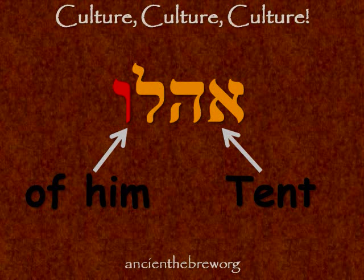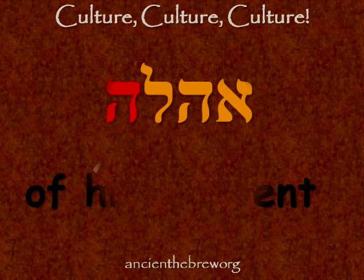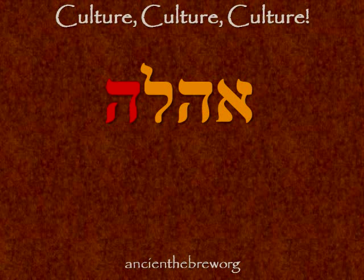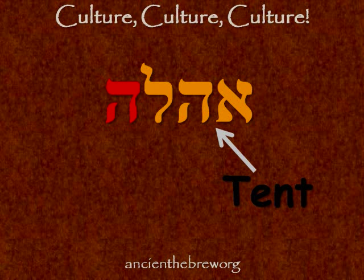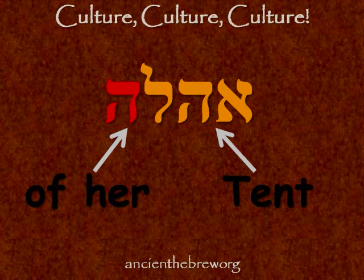But this is not the word we find in Genesis 9:21. In Genesis 9:21, the Hebrew word is Ohelah. That's the word Ohel, meaning tent, but this time with the suffix Ah, which means 'of her' — or 'her tent.' So Genesis 9:21 is a mistranslation that should be translated as: 'And he drank of the wine and was drunken, and he was uncovered within her tent.'